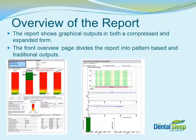The report on the patient has graphical input, both in a compressed and expanded form. Compressed format is on the first page and includes five key graphs that we'll review in more detail later. There are also several pages of expanded data. This information will not be covered in this module. The front overview page divides the report into pattern-based and traditional outputs.